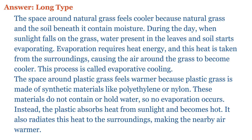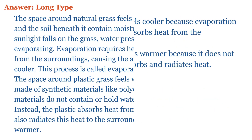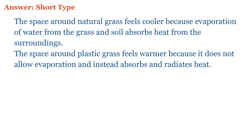The space around plastic grass feels warmer because plastic grass is made of synthetic materials like polyethylene or nylon. These materials do not contain or hold water, so no evaporation occurs. Instead, the plastic absorbs heat from sunlight and becomes hot, and radiates this heat to the surroundings, making the nearby air warmer. Short answer: natural grass feels cooler because evaporation of water from the grass and soil absorbs heat from the surroundings, while plastic grass feels warmer because it does not allow evaporation and instead absorbs and radiates heat.